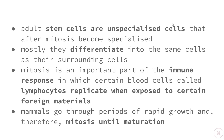Most of the time, stem cells will differentiate — they will change into the same cells as their surrounding cells. If stem cells are found in the bone marrow, they'll become bone marrow cells; if found in the skin, they'll become skin cells. Mitosis is also an important part of the immune response to help protect us against infectious diseases. Certain blood cells called lymphocytes — white blood cells — will replicate themselves when exposed to foreign materials. If you get an infection, your lymphocytes remember it, and upon reinfection they undergo mitosis rapidly to produce large numbers to stop you from getting sick again. That's why we don't often get the same infectious disease twice, such as chicken pox.